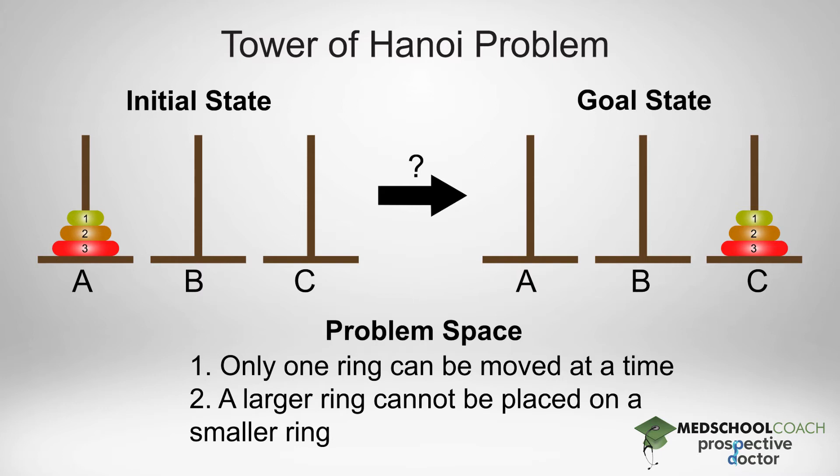Our goal state is to have the same three rings on peg C. So now we know what the initial state is and what the goal state is. In order to get from the initial state to the goal state, we can move the rings. However, we can only move one ring at a time, and we cannot place a larger ring on a smaller ring.